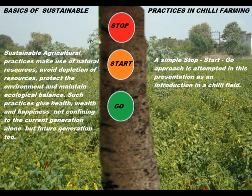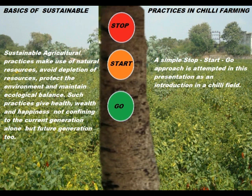Sustainable agricultural practices make use of natural resources, avoid depletion of resources, protect the environment, and maintain ecological balance. Such practices give health, wealth, and happiness — not confining to the current generation, but for the future generation too.